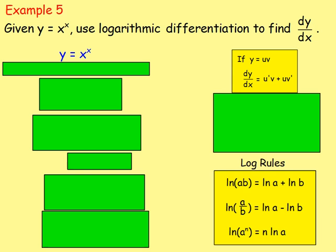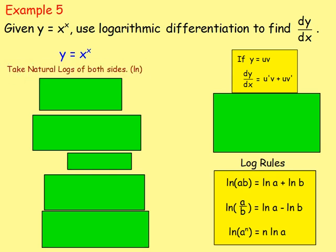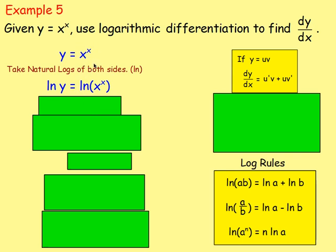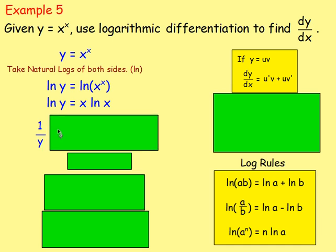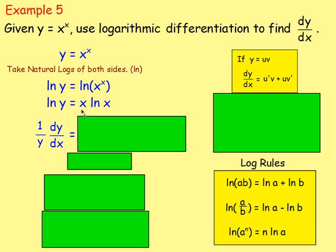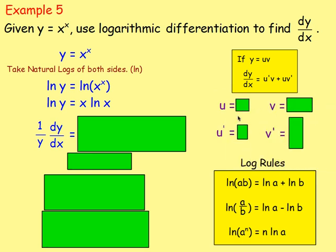Example five: given y = x^x, use logarithmic differentiation to find dy/dx. How do you know to use logarithmic differentiation? Because x is part of an index. Take the natural logs of both sides: ln(y) = ln(x^x). The whole point is we can move the index down: ln(y) = x·ln(x). Now differentiate — but notice x·ln(x) requires the product rule, as you have two functions in terms of x multiplied together.